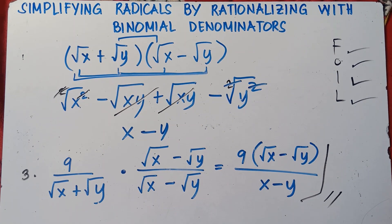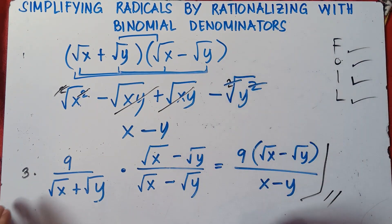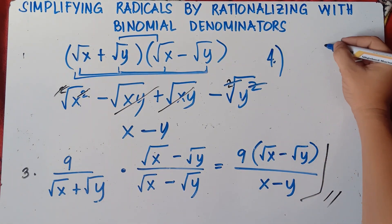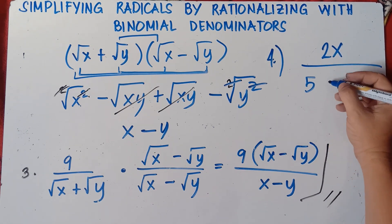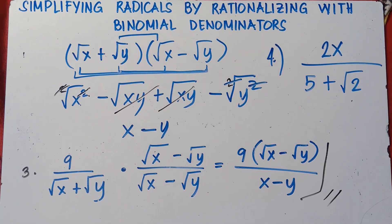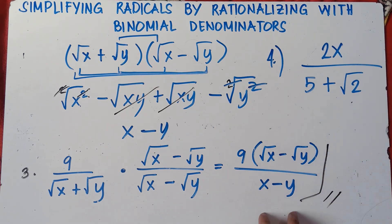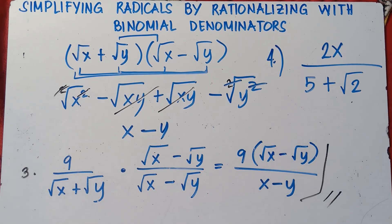That's how you simplify radicals by rationalizing with binomial denominators. Try this practice problem and put your answer in the comment section below: 2x over (5 plus square root of 2). Remember, in radicals you're allowed to have radicals on the numerator, but not on the denominator — that's why we rationalize. This is Teacher MJ, and I hope you learned something new today. If you like this video, don't forget to like, share, and subscribe. Goodbye for now!